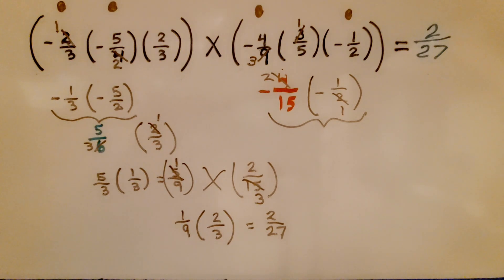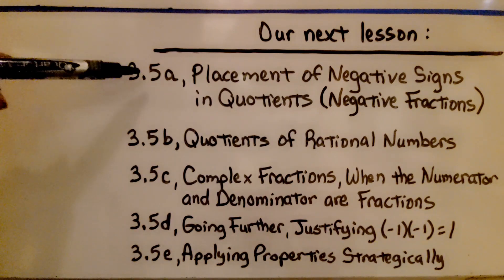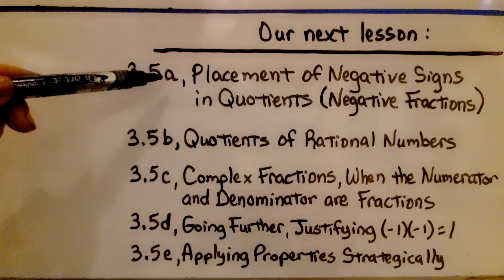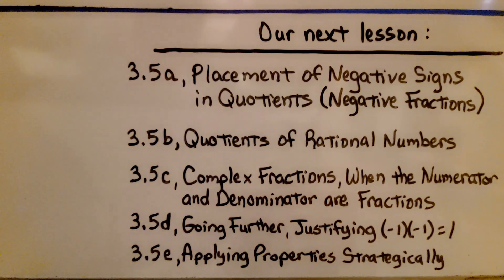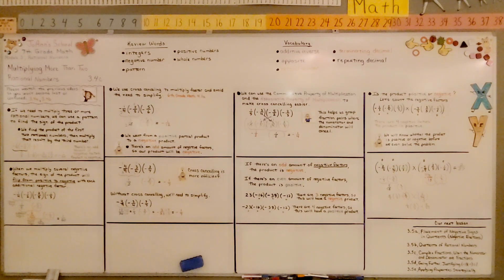If you're having trouble remembering cross-canceling, there's a link to the sixth grade math lesson 4.1a video in the description. We're finished with lesson 3.4 and moving on to 3.5, which is split into five parts. Next we'll talk about placement of negative signs in quotients and negative fractions in numerators and denominators. Remember: the sign flips with each additional negative factor, and cross-canceling helps us avoid simplifying. Have a great day and please join me for lesson 3.5. Bye.